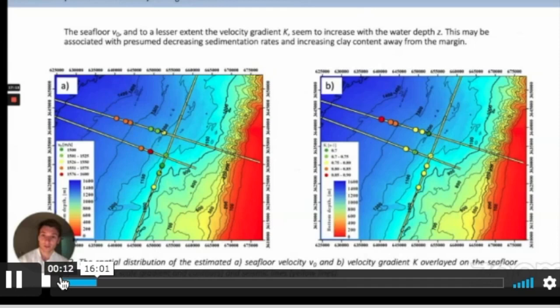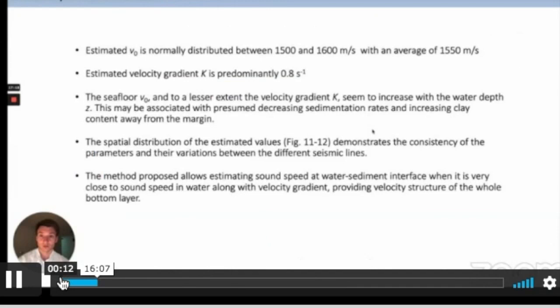To sum up, we estimated V0. It is normally distributed from 1500 to 1600 and average is 1550. I think it's pretty cool that we succeeded to estimate such low sound speed in the interface. The velocity gradient is predominantly 0.8. They tend to increase with water depth. Spatial distribution demonstrates the consistency of the parameters. The method proposed allows estimating sound speed at water sediment interface when it is very close to sound speed in water, along with the velocity gradient. It provides the velocity structure of the whole bottom layer.